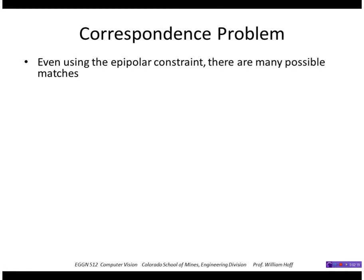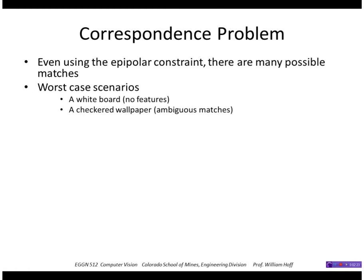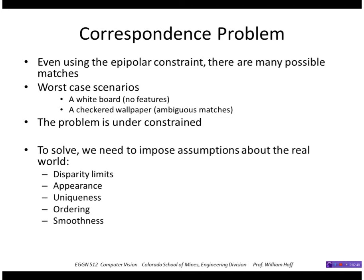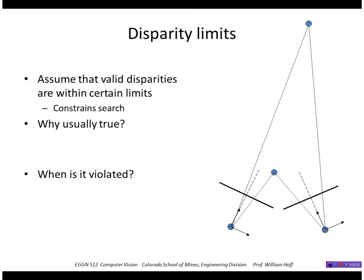Even using the epipolar constraint, we still have ambiguous matches. You might see cases of no texture or very repetitive texture causing problems. The problem is underconstrained — there's no unique answer. The only way to solve this is to impose assumptions about the real world: things that are usually true but might occasionally be false — these are heuristics. One heuristic is to limit the search for disparities to within certain limits, searching only a small range of possible disparities in the right image. This effectively limits the range of depths detectable, but that may be acceptable depending on the application.